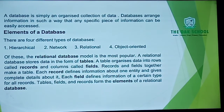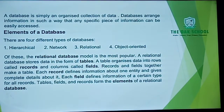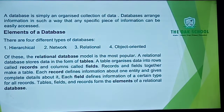Our relational database stores data in the form of tables. A table organizes data into rows and columns called fields. Records and fields together make a table. Each record defines information about one entity, and each field defines information about a certain type. Tables, fields, and reports form the elements of our relational database.